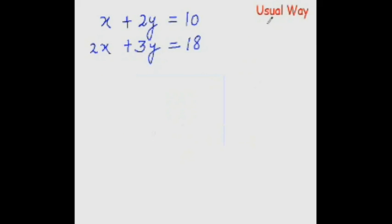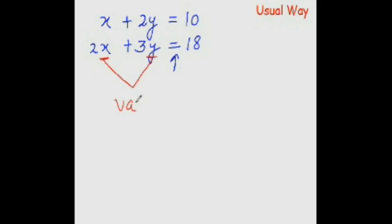Let me first tell you the usual way of solving simultaneous equations, but before I do that, let me give you a brief introduction to algebraic equations. Anything that has an equal to sign is called an equation. The alphabets x and y are known as variables, and this number that you are seeing here is known as a constant.